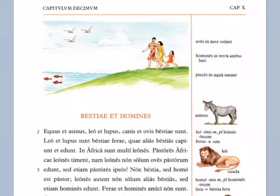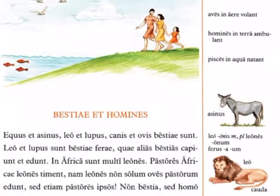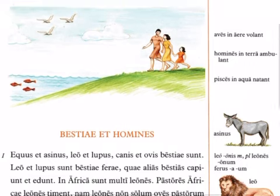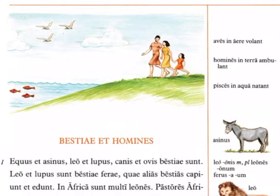Salve te omnes! Welcome to this video lesson on Capitulum Decimum, Chapter 10. The title is Bestiae et Homines — beasts or animals, creatures, and humans.